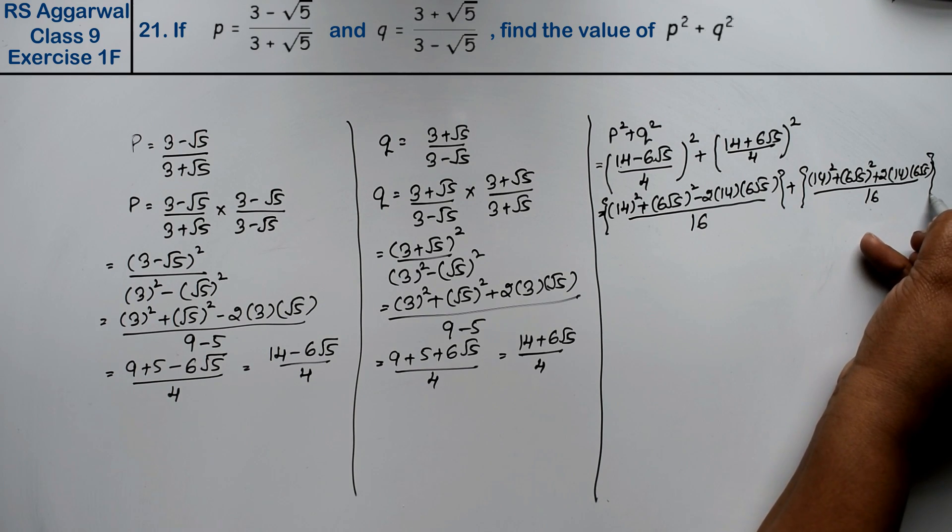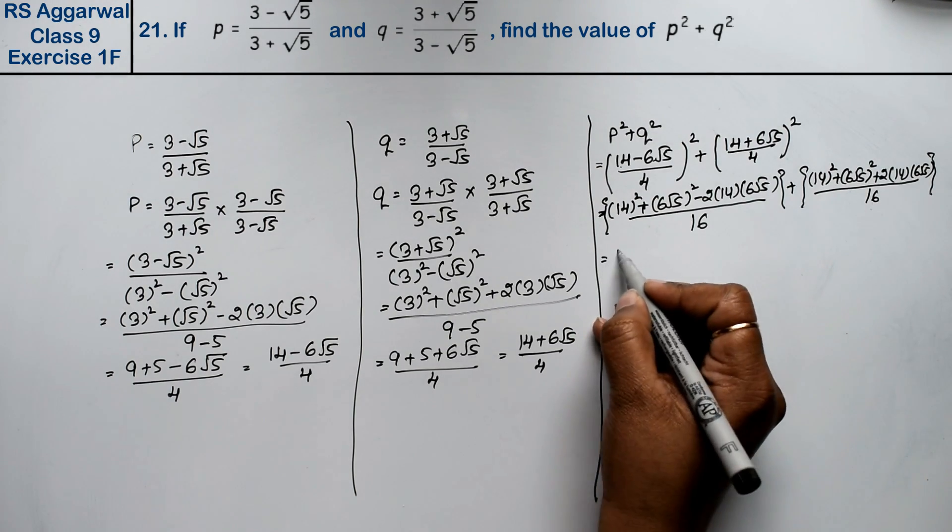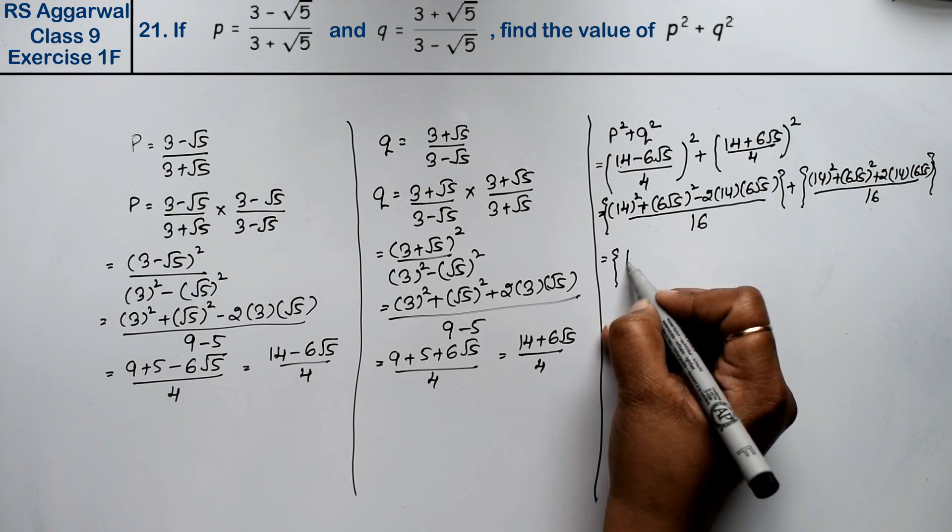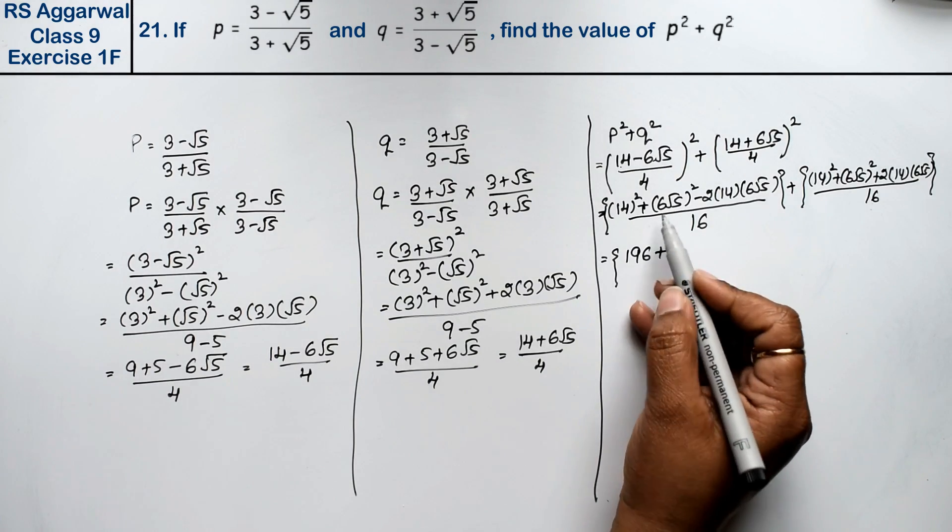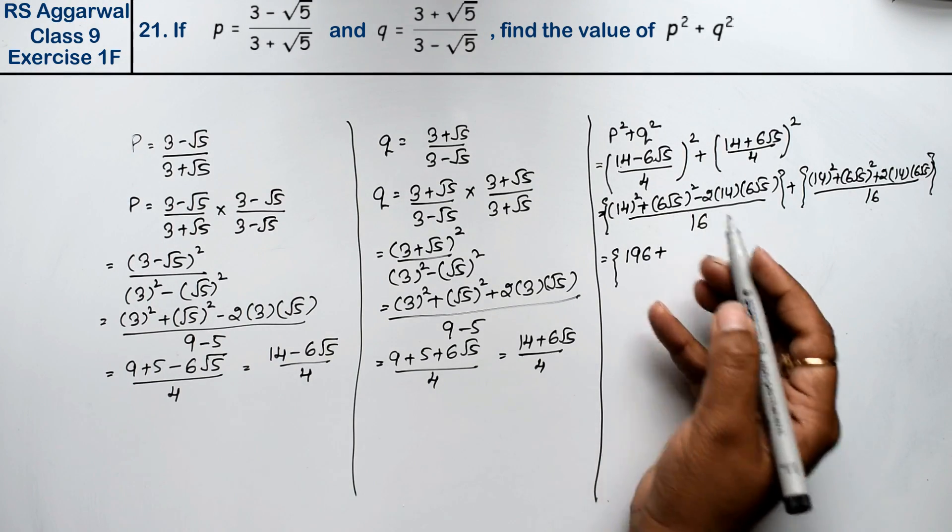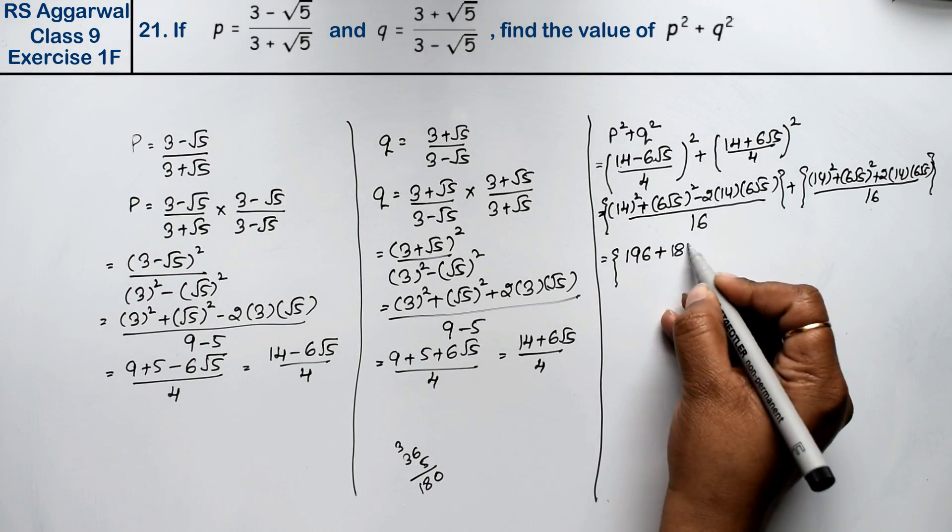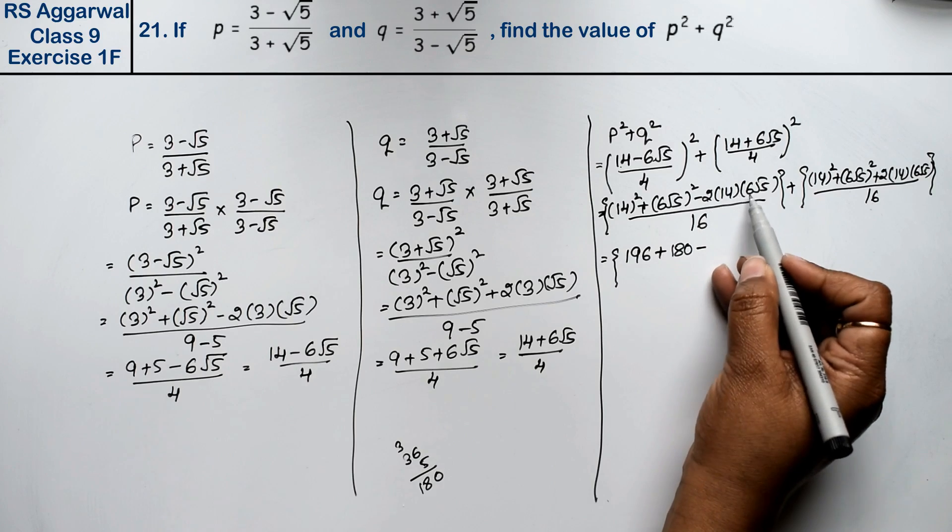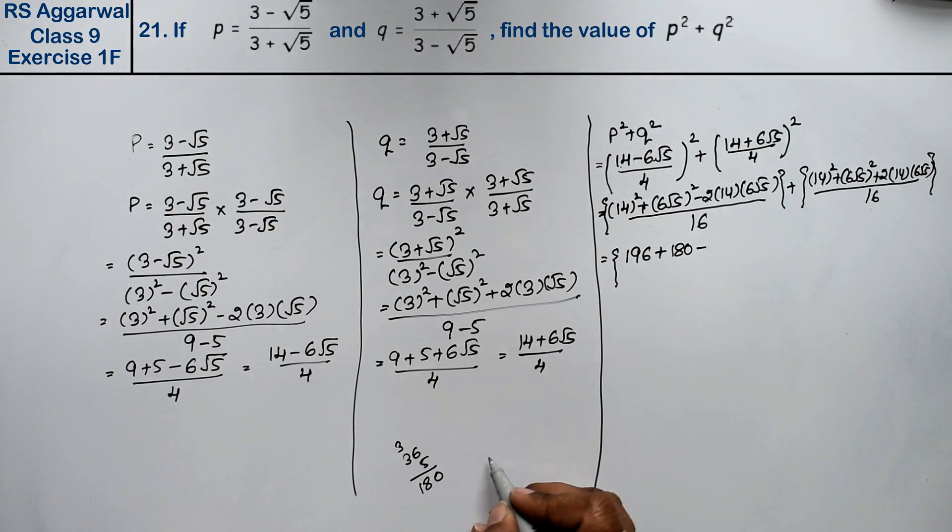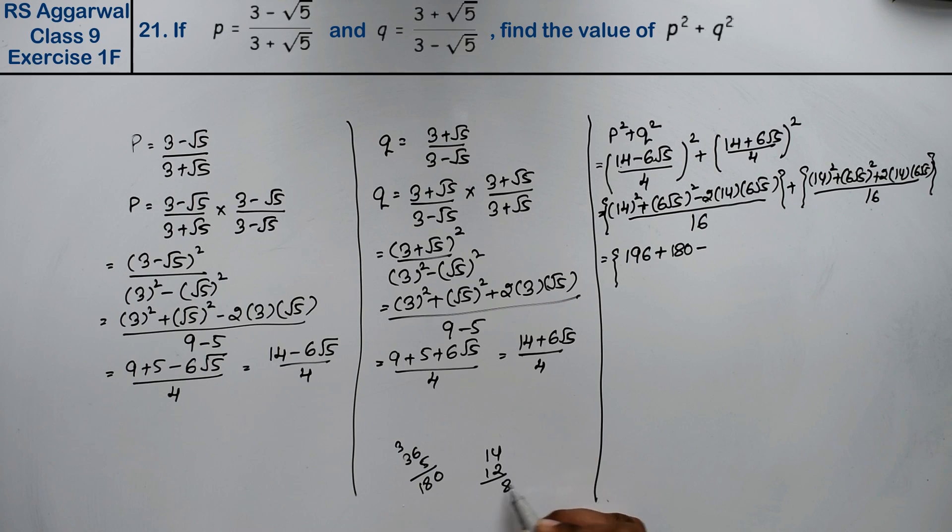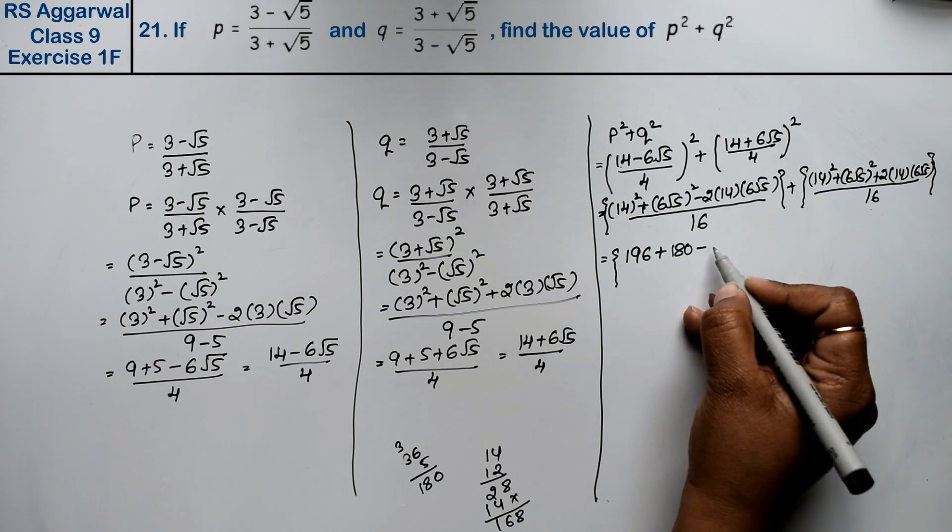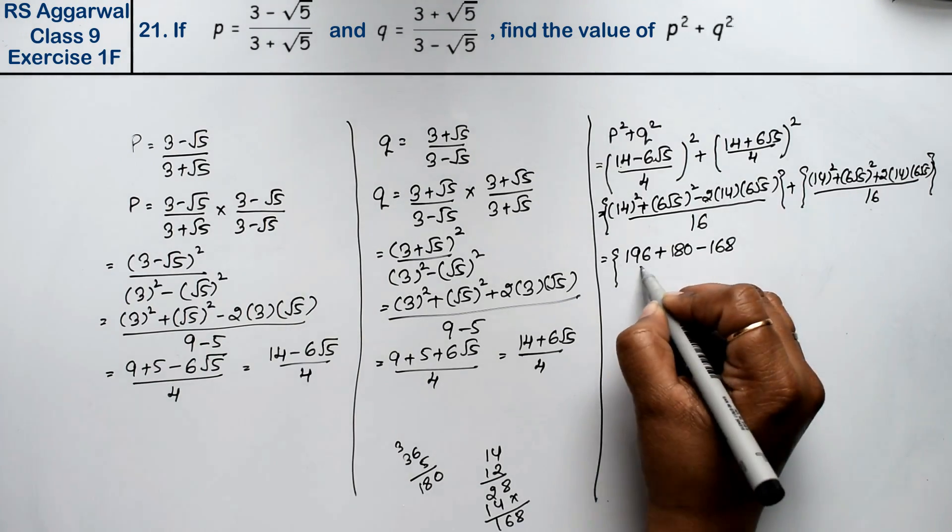So that means 14 square plus 6 root 5 square plus 2 into 14 into 6 root 5 upon 16. Now, 14 into 14 is 196, plus 6 times 6 is 36, 36 into 5 is 180, plus 2 into 14 into 6 is 12, so 14 into 12 is 168. So here is 168 root 5 upon 16.